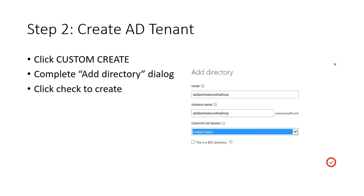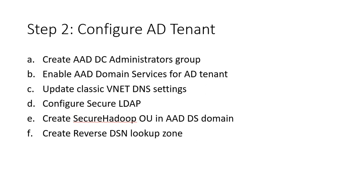Then move on to creating an AD tenant: click custom create, complete the AD dialog, check the checkbox, choose the region, and that should be it. Quick recap: we did the vNet, Active Directory, and the tenant — three things. Moving to the configuration for the tenant: create an AAD admin group, enable AD domain services, update classic vNet DNS settings, configure secure LDAP, create Hadoop secure in the OS via domain services, and set up the DNS lookup.